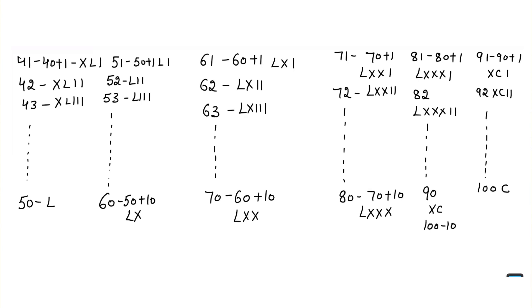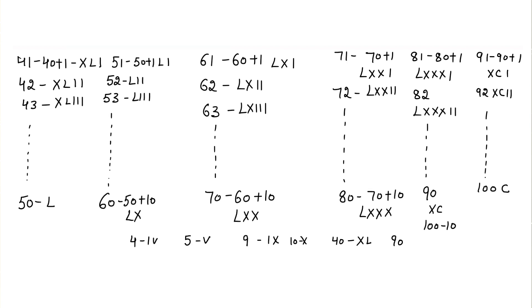In Roman numerals, you have to remember a few key values: how to write 4 — it's IV; how to write 5 — it's V; how to write 9 — it's IX; how to write 10 — it's X; how to write 40 — it's XL; and how to write 90 — it's XC.